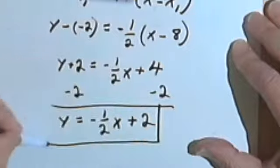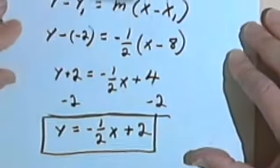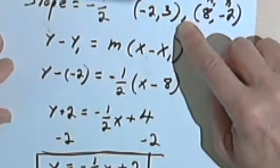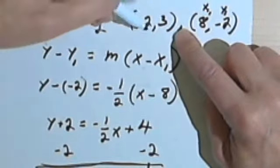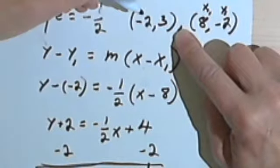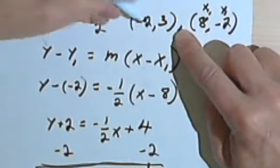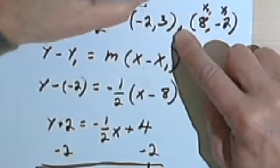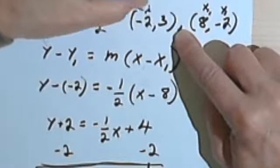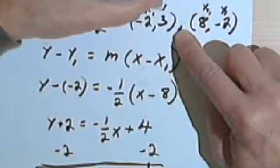So this should be my answer. I think that's the same thing I got last time. And let's take the other pair, the pair I didn't use, negative 2 and 3, and check this. So I'm gonna plug in negative 2 for x and 3 for y.